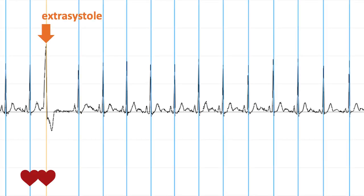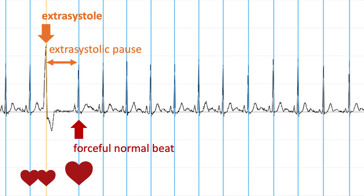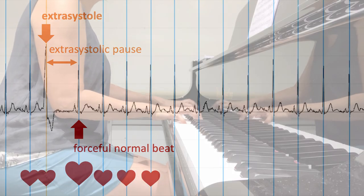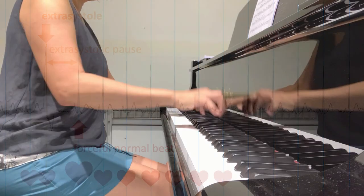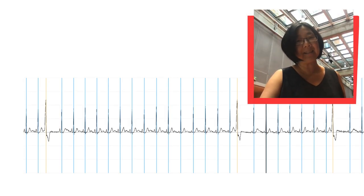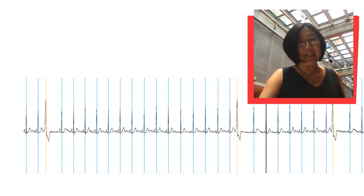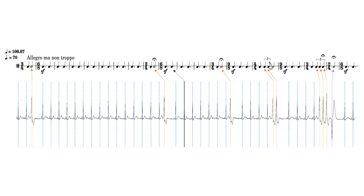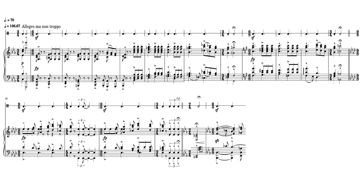The music gives a sense of the abnormal pulse. First, there's an early beat, also known as an extrasystole, a pause, then a forceful, normal beat. As you may have noticed, the music follows the rhythm of the ECG. The ECG can be transcribed using rhythm notation, and the rhythm turned into playable piano music.